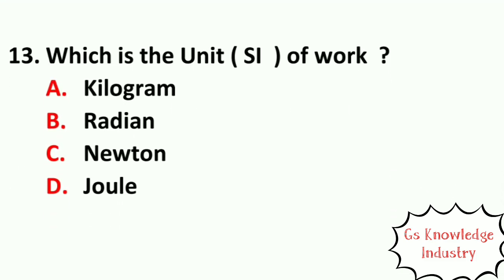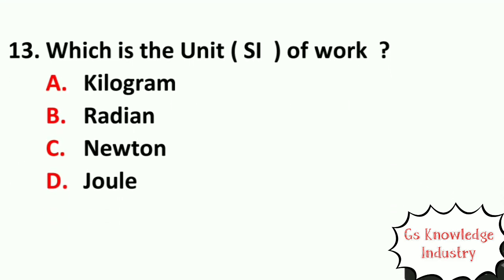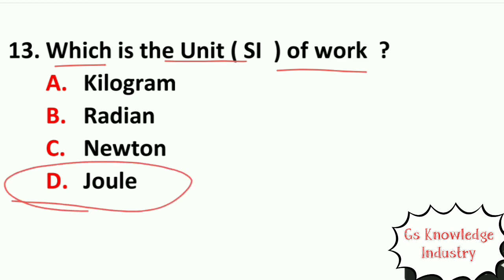Question thirteen: which is the SI unit of work? Option A, kilogram. Option B, radian. Option C, Newton. Option D, Joule. The right answer is Option D — Joule is the unit of work.